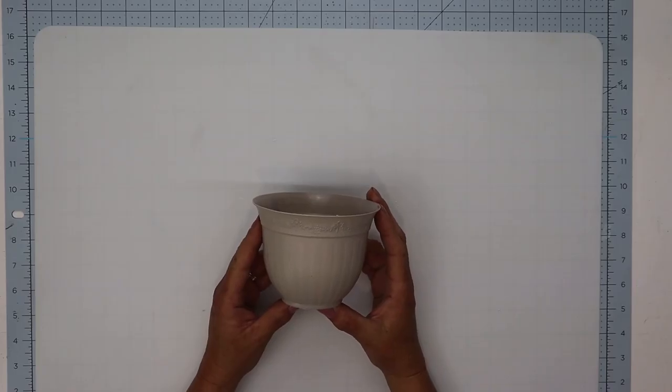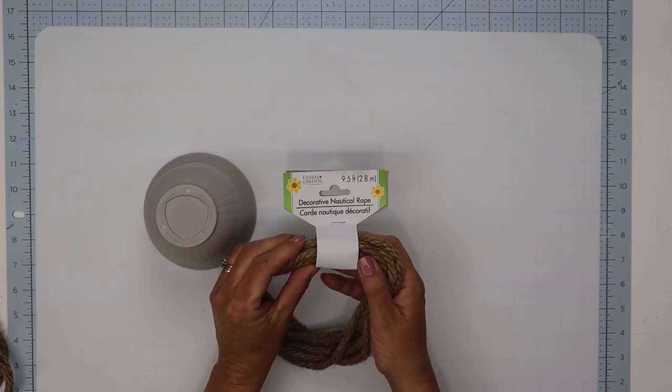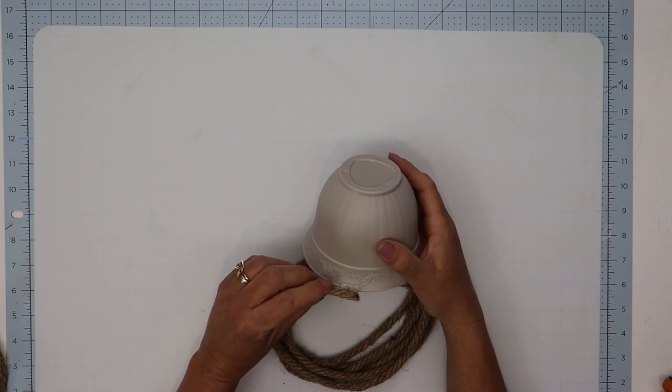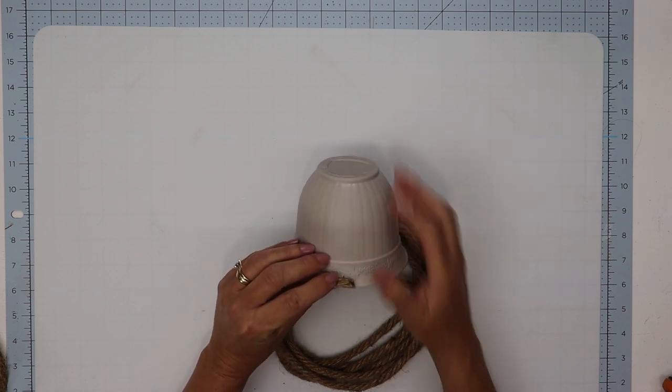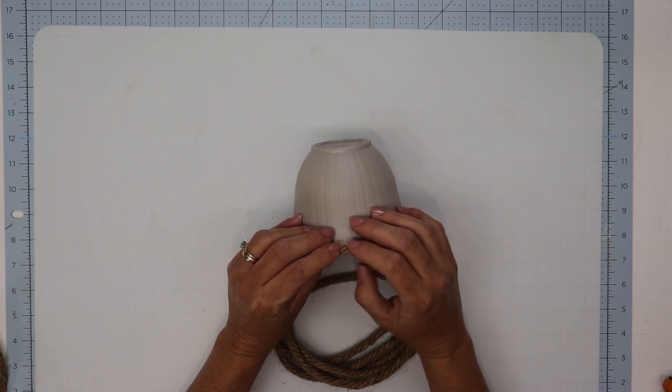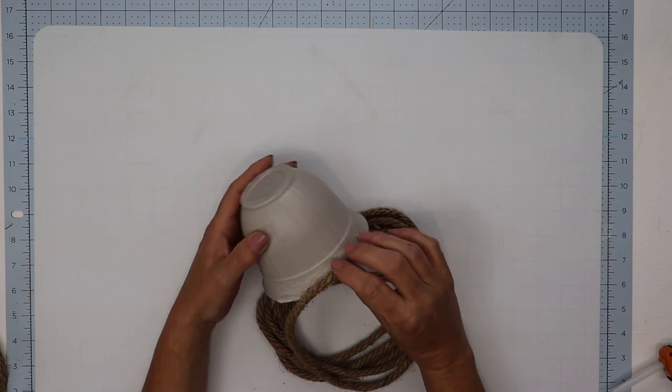And because this is bee themed, we have to create a gorgeous beehive. Using one of Dollar Tree's plastic plant containers, I believe you can get three of these for one dollar and twenty-five cents, as well as one and a half of their nautical rope. I'm going to hot glue this around the top part of the planter, which is now going to become the bottom part of our beehive.